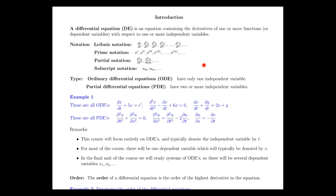There are two main types of differential equations. Ordinary differential equations, or ODEs, have only one independent variable — the top two notations relate to those. Partial differential equations, or PDEs, have two or more independent variables. This course is going to focus entirely on ODEs and typically denotes the independent variable by t, though that's not always the case.